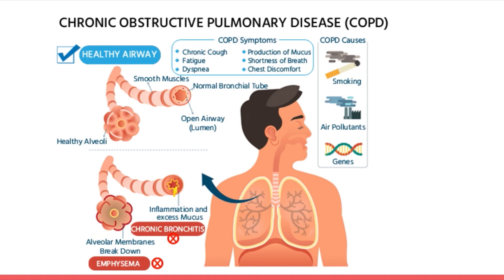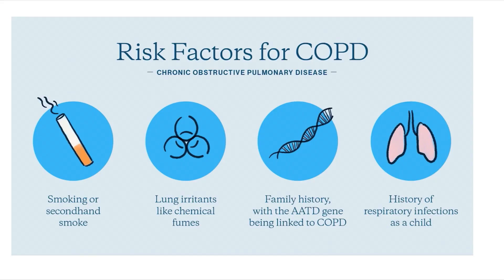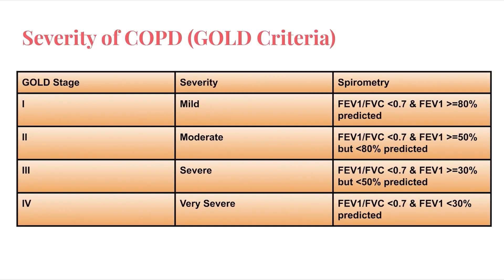Smoking is the most important cause of COPD, along with air pollutants and genetic factors. Risk factors include smoking, lung irritants like chemical fumes, family history with the AATD gene — alpha-1 antitrypsin deficiency — linked to COPD, and history of respiratory infections in childhood.